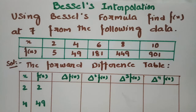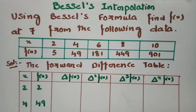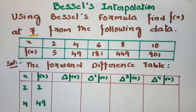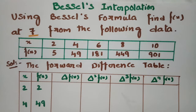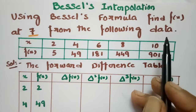Today's video I am going to solve a problem using Bessel's interpolation formula. We have to find f(x) at x equal to 7 from the following data.